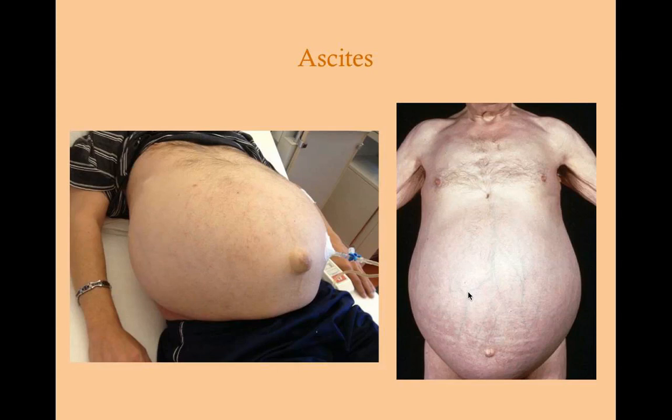These are two patients that both have ascites. You can tell because the veins are clearly engorged, the umbilicus is protruding, and one patient has a drainage tube. You would mostly determine ascites on physical exam, but these are very clear visual examples.